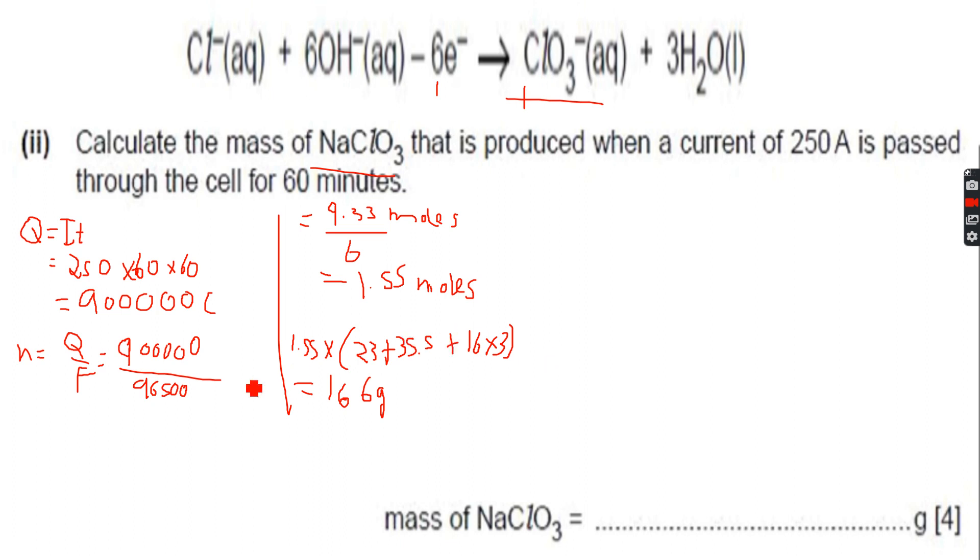Let's just go through our calculations quickly. Q equals IT, so 250 into 60 into 60, which gave us the charge. And N equals Q over F, so we divided 900,000 by 96,500, which was 9.33 moles.